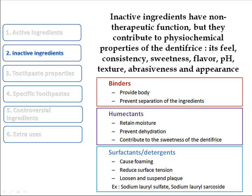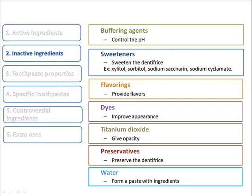Among the inactive ingredients we find binders that provide body and prevent separation of the ingredients, humectants that retain moisture, prevent dehydration, and contribute to the sweetness of the dentifrice. Also surfactants and detergents cause foaming, reduce surface tension, and loosen and suspend plaque — examples include sodium lauryl sulfate and sodium lauryl sarcosinate.